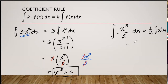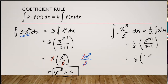When we solve this further, we have 1/2 times x to the 3+1 over 3+1, giving us 1/2 times x raised to 4 over 4. Now, many students get confused here — are we going to multiply straight across (numerator times numerator, denominator times denominator), or cross-multiply? What is the correct process?